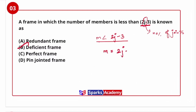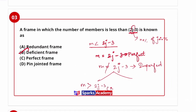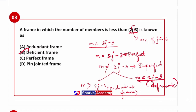For a perfect frame, m must equal 2j minus 3. An imperfect frame is when m is not equal to 2j minus 3. If m is greater than 2j minus 3, it represents a redundant frame. If m is less than 2j minus 3, it represents a deficient frame. So the answer here is deficient frame.